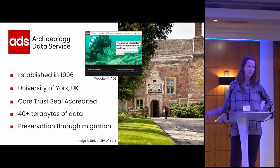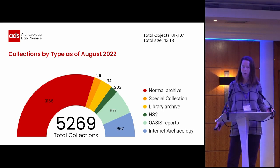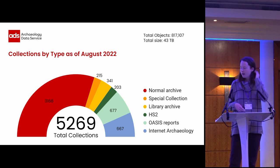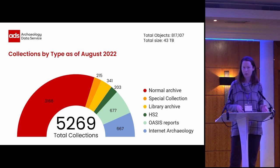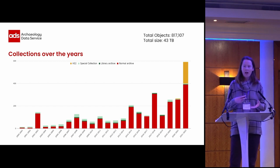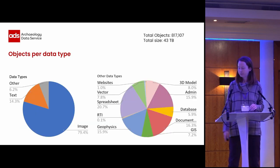If we look at what we actually hold, we hold over 5,000 collections. Most of those would be standard collections from excavations, but we have a large number of special collections, library collections, and High Speed 2 collections, which I'll go into a bit more. You can really see here how the number of High Speed 2 archives we're starting to receive may impact what we hold and what we know about those archives.